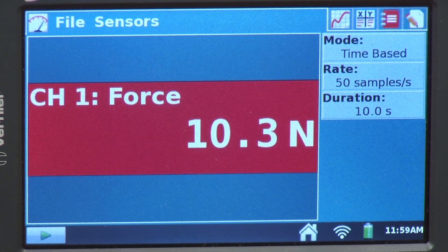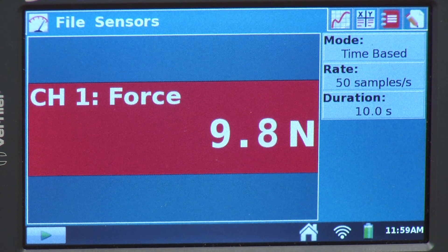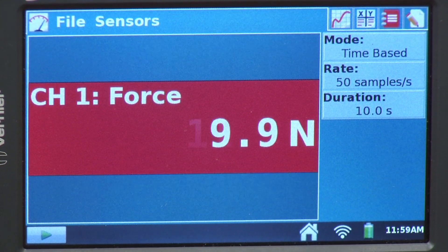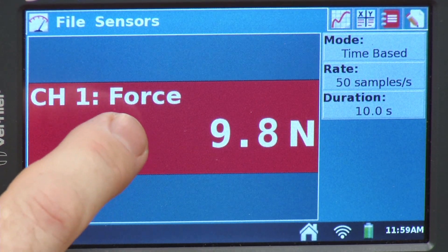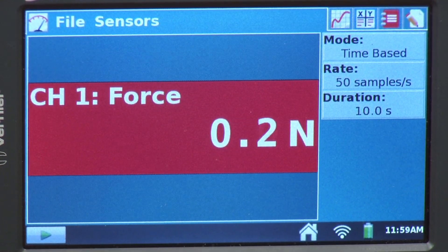One common thing that you might do with a force plate is zero the force plate before you use it. It's like taring a balance. You zero your bathroom scale before you get on it. To do that, you tap on the meter and you can go to zero, and now it's reading close to zero.